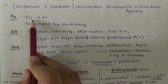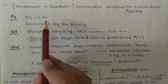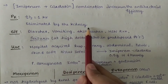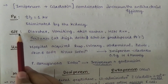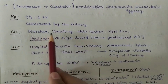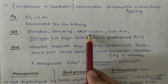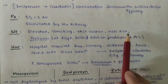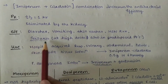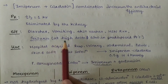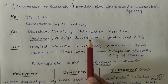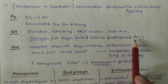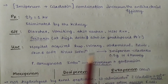Pharmacokinetics: half-life is 1 hour. It is eliminated by the kidney. Side effects include diarrhea, vomiting, skin rashes, hypersensitivity reactions, and seizures — only at high doses and in predisposed patients.